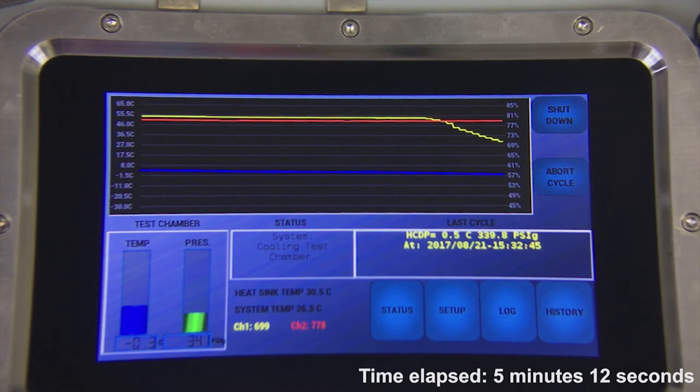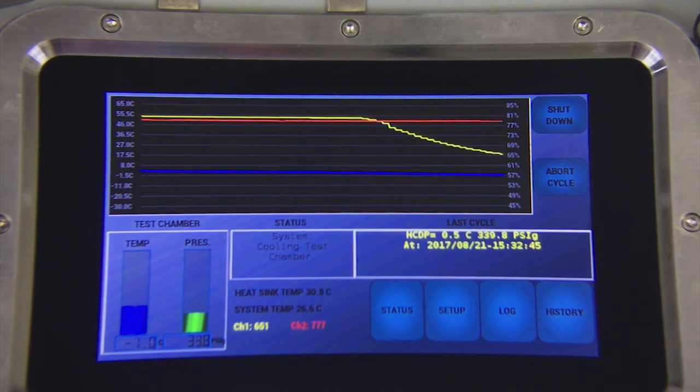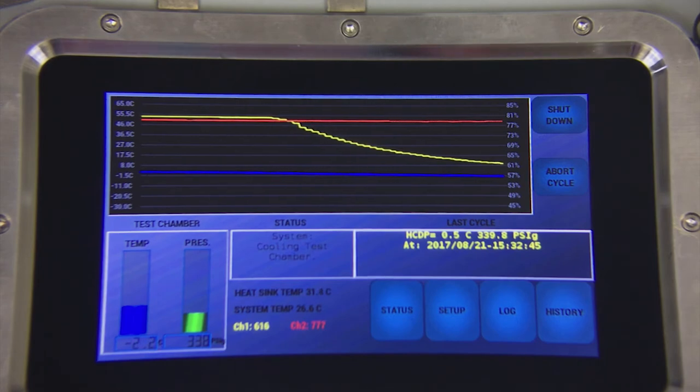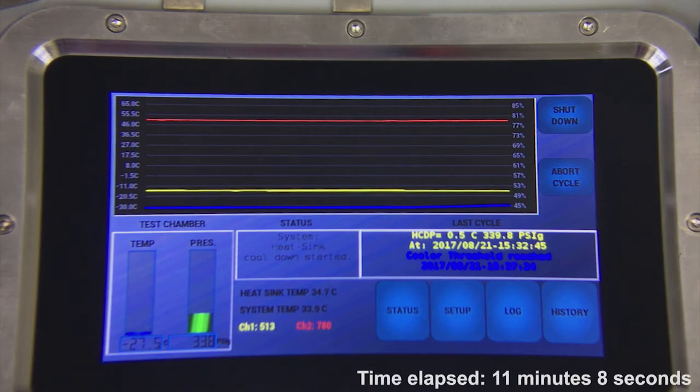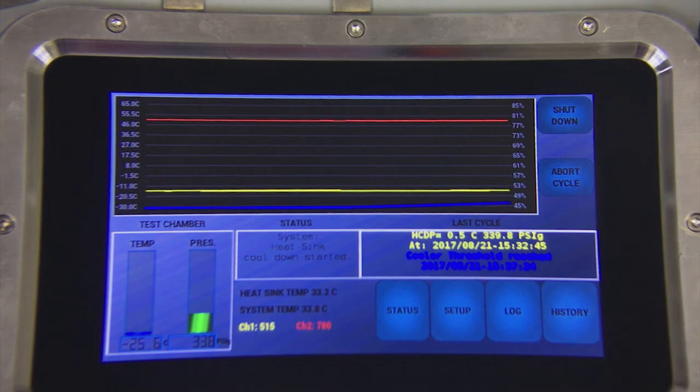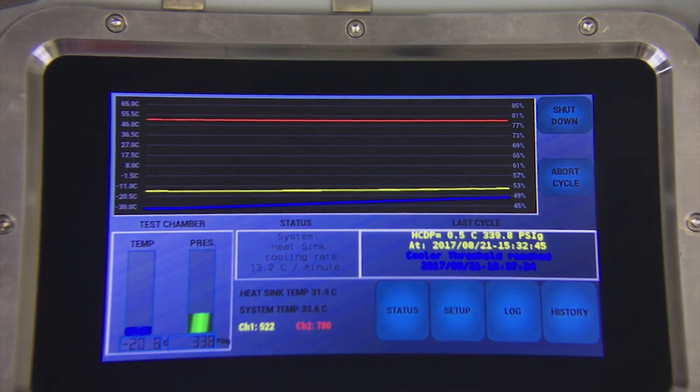Once a hydrocarbon dew point is found, the test results will be posted in the last cycle box. The unit will continue cooling until it finds another dew point or reaches the cooling limit. The test cycle has ended and now the system is in heat sink cool down mode. In order for the next test cycle to begin, all the temperatures including the crystal chamber, heat sink, and system temperature must return to equilibrium, as well as the recovery of detector signals of channels 1 and 2.